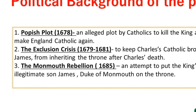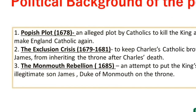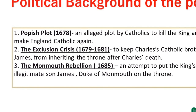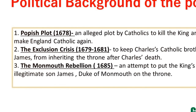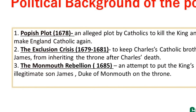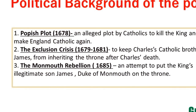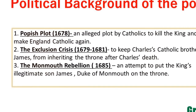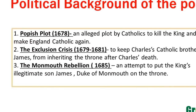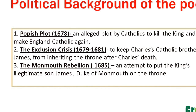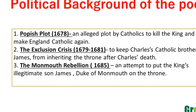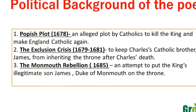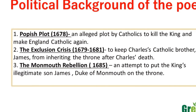The poem tells the biblical tale of the rebellion of Absalom against King David. Dryden used this biblical allegory to represent three important political events of his time. First is the Popish Plot of 1678, an alleged plot by Catholics against King Charles II. Next is the Exclusion Crisis, an attempt to exclude James, brother of King Charles II, from inheriting the throne, which went on from 1679 to 1681.